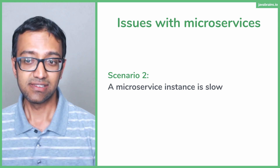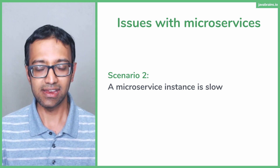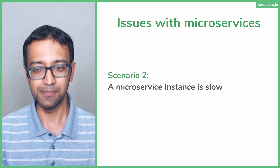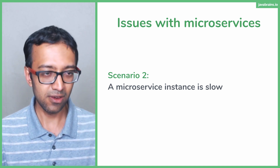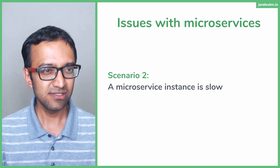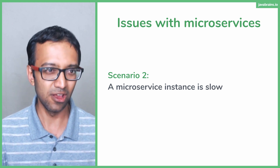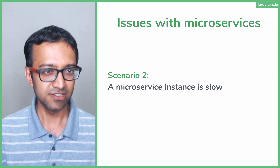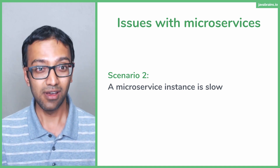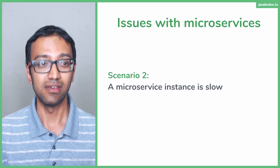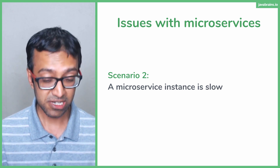Is this something to worry about? If an instance goes down, I can understand that — the thing doesn't even exist, so everything can go down. But a microservice being slow seems like not a big issue, right? That particular service is slow, the rest of the application should work fine. But it turns out a microservice being slow is a much, much bigger problem.